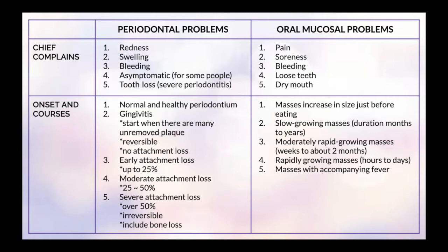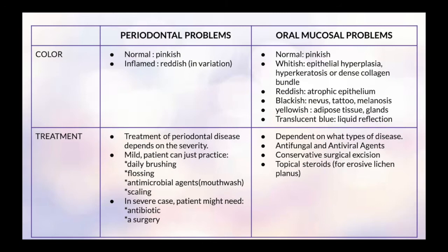For the onset and causes of oral mucosal problems, it may start with a massive increase in size just before eating, and may progress to slow-growing masses over months to years. If untreated, it can progress to moderately rapid growing masses in about 2 months, then rapidly growing masses in hours to days, and may also present as masses with accompanying fever.